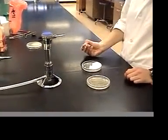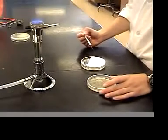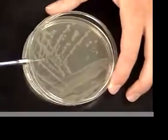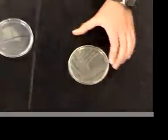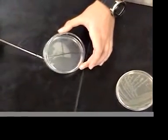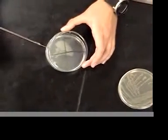Flame your loop to sterilize it. Allow it to cool either in the air or by touching it to a place in the agar. Now take a single isolated colony from your stock plate and streak it down one quadrant in a squiggle.